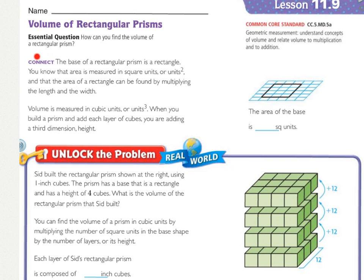Connect. The base of a rectangular prism is a rectangle. That's why it's called a rectangular prism. You know that the area is measured in square units, or units squared, with the little two, and that the area of a rectangle can be found by multiplying the length and the width.